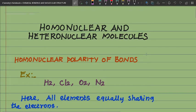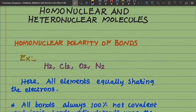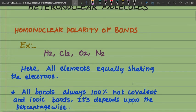Welcome to Chemistry. Today we will see homonuclear and heteronuclear molecules. Homo means same, hetero means different. For homonuclear polarity of bond, see the examples below: H₂, Cl₂, O₂, N₂ — here all elements are equally sharing the electrons.